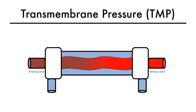Transmembrane pressure is the hydrostatic pressure gradient between the blood and dialysate compartment that allows for ultrafiltration and convection to occur. For details on the process of convection, please reference back to the video on convection.